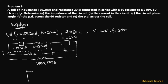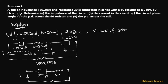We can simplify the circuit since the two resistors are in series — total resistance RT = 20 + 60 = 80 ohms — connected in series with the inductor L = 159.2 millihenry to the AC source.